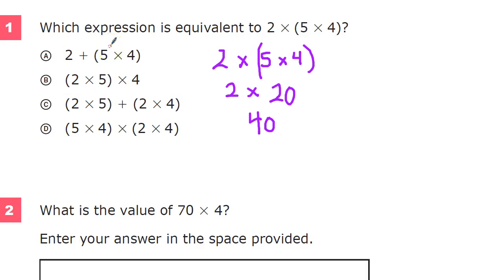So if I take this one, 2 plus 5 times 4, this is a clear violation because there's an addition sign there. 5 times 4 would be 20, of course, and then I'm going to add 2 to that, and it gives me 22. That's nothing. I don't like that one. You're out.